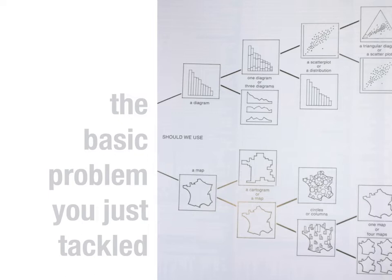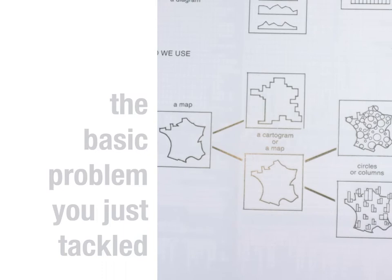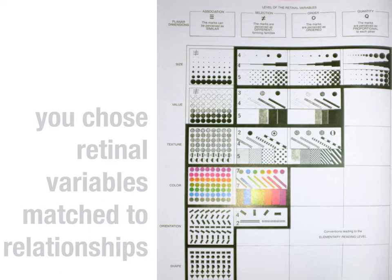The basic problem you just tackled was: should we use a diagram or a map? If you chose a diagram, should you use one diagram or three? Should it be a scatter plot or a distribution? If you chose a map, should it be a cartogram or a map? Should it use circles or columns? There are all kinds of choices. And you chose what Bertin calls retinal variables — the variables that can be perceived by your retina to match relationships. These include the planar dimensions (x and y coordinates), as well as size, value, texture, color, orientation, and shape.